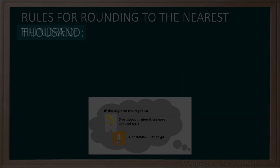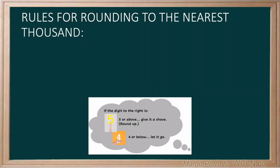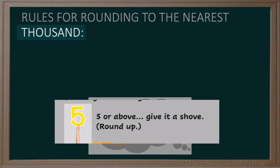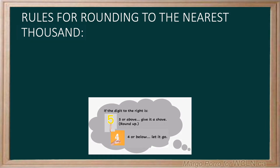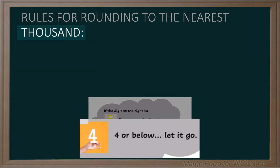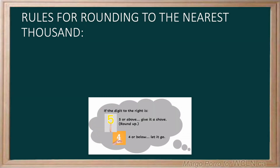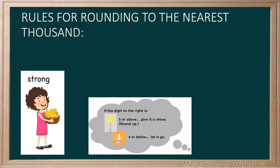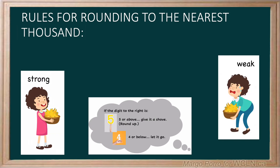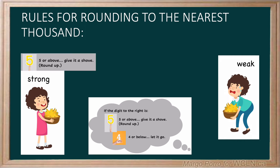In other words, if the digit to the right is five or above, give it a shove — round up. Four or below, let it go. You can think of the numbers as strong or weak. The strong numbers, five or above, can give the thousands a shove up. They have the power to do this. The weak numbers, four or below, cannot make the thousands change.